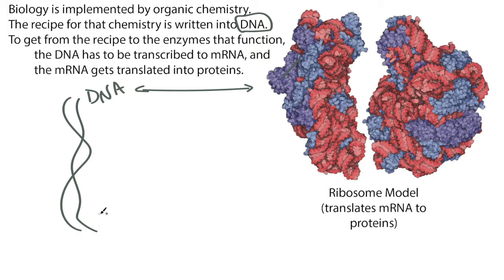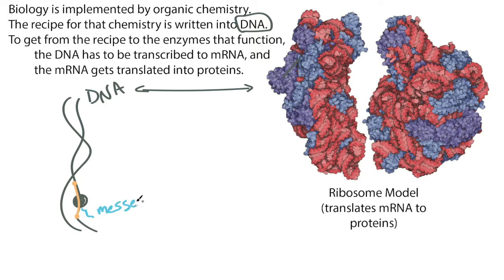The first thing that happens is that there is an enzyme that attaches to a gene on the DNA. There's a start codon on the gene and there'll be some distance until you get to a stop codon — these are signals in the DNA itself. This enzyme basically moves along the DNA and as it does, it creates what we call a messenger RNA molecule, or mRNA.